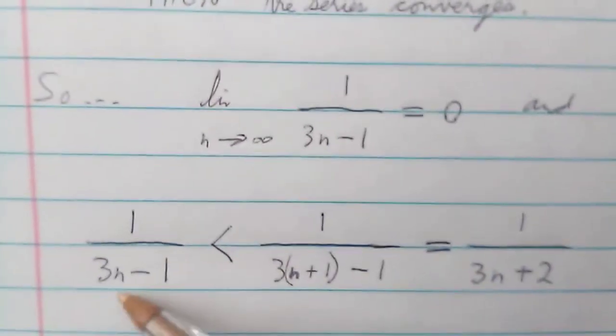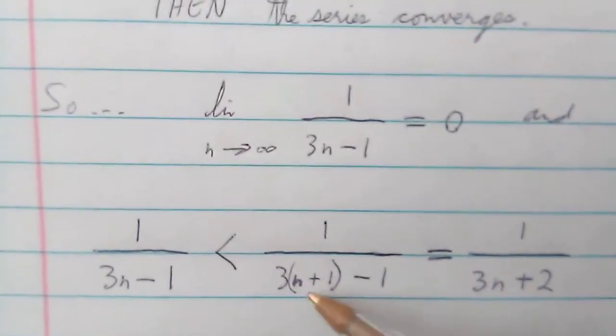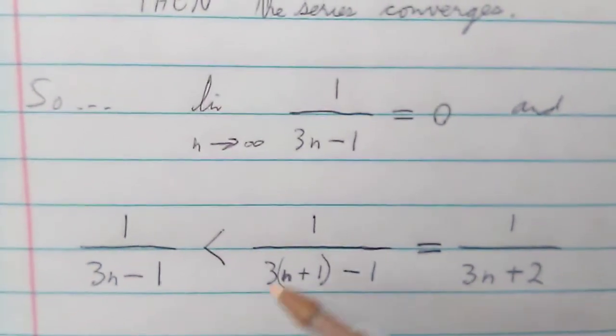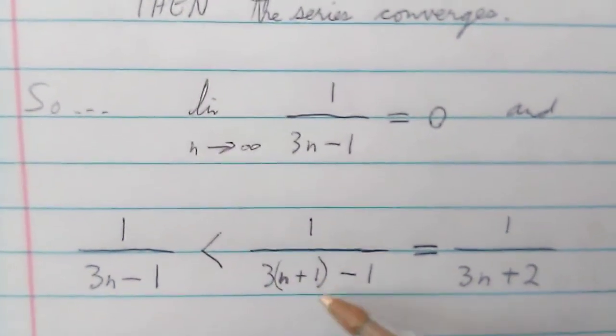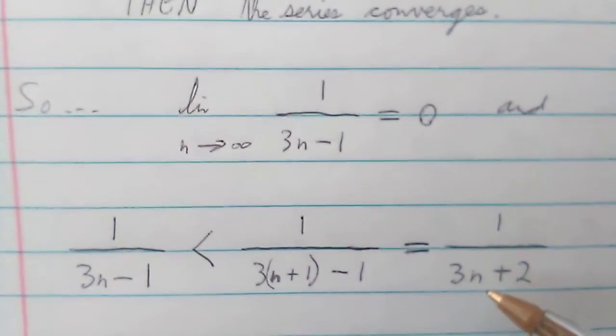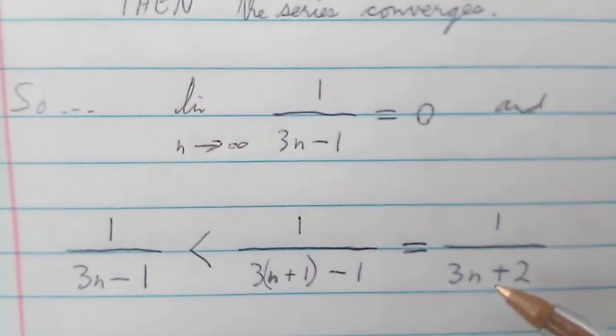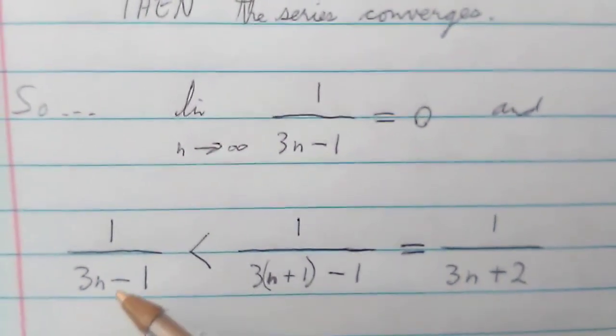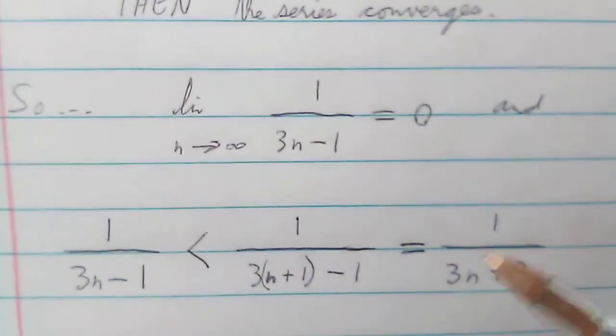Then down here, we're going to look at the difference between n and n plus 1 terms. And as we can see on this side, it just gets bigger and bigger. So we have 3n plus 2 on the right versus 3n minus 1.